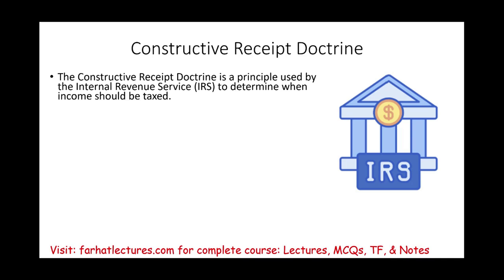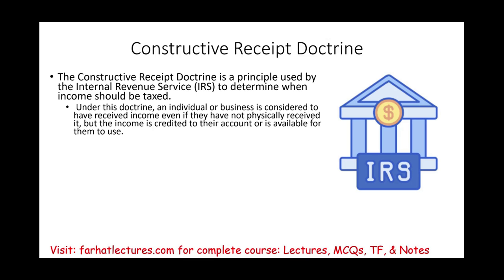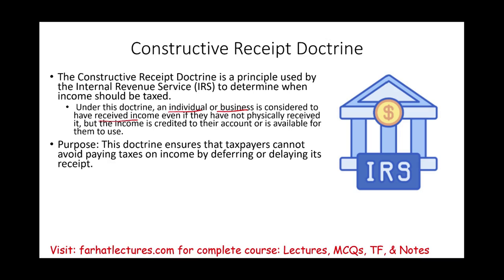If you did receive it and you have access to it, you should pay your taxes. Under this doctrine, an individual or business is considered to have received income even if they didn't physically receive it. So if the money was credited to your account and it's available to you, it is your money and you need to pay taxes. The purpose of this doctrine is to ensure that taxpayers cannot avoid paying taxes by deferring or delaying its receipt, because one tax strategy is to delay paying taxes because of the time value of money.